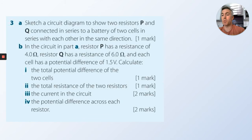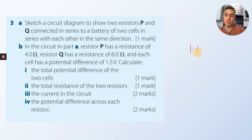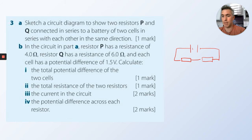Sketch a diagram to show two resistors P and Q connected in series to a battery of two cells in series with each other in the same direction. So we've got two cells, a resistor P, and another resistor Q.